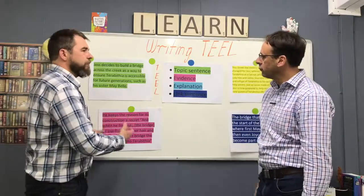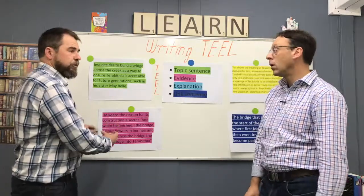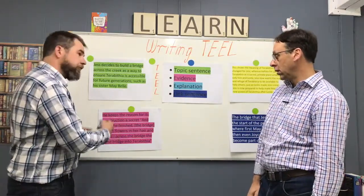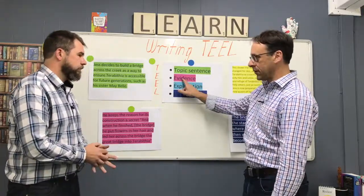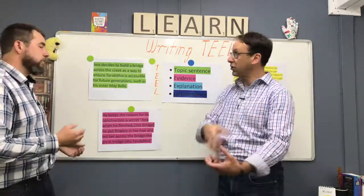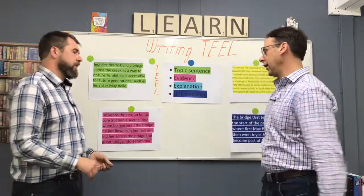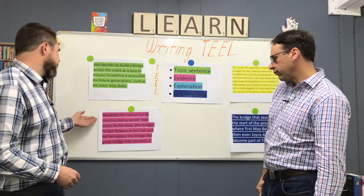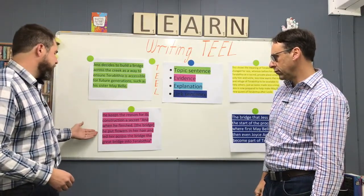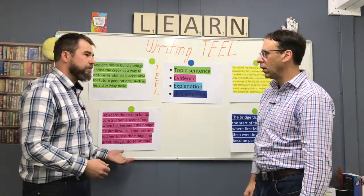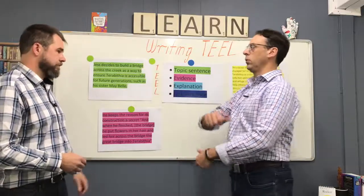Now we've got to have evidence for that topic. We've actually got a quote, with a few words around it to help the quote make sense, and then we go straight into the quote. The evidence is the quote because it comes out of the text. 'He keeps the reason for its construction a secret. And when he finished the bridge, he put flowers in her hair and led her across the great bridge into Terabithia.' That's the evidence for why he's building the bridge.